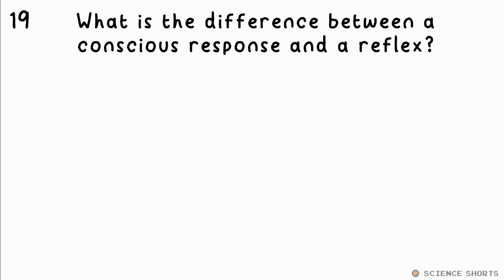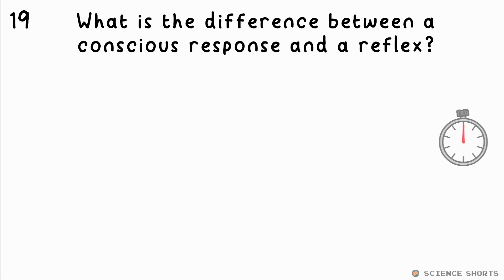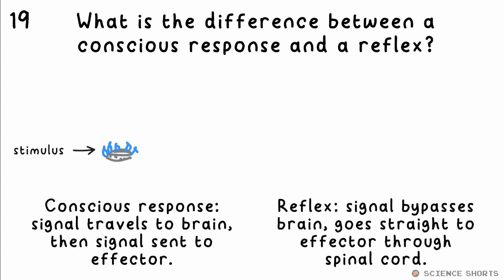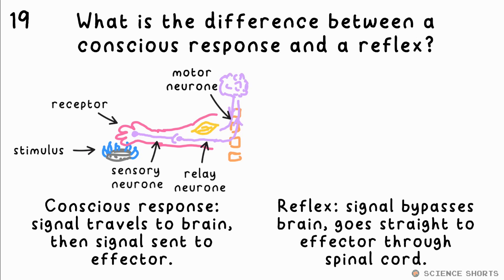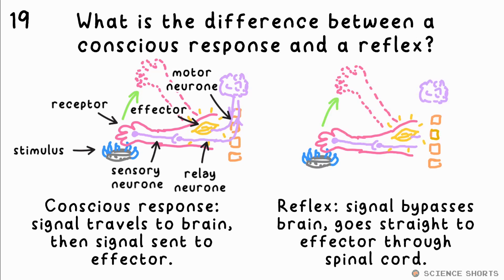What's the difference between a conscious response and a reflex? Use the names of the parts of the nervous system involved. A conscious response to a stimulus involves the signal going from the receptor — say skin, for example — through a sensory neuron to relay neurons, up the spinal cord to the brain. You make the decision to act and then a signal goes back via relay and motor neurons to an effector, say the muscles in your arm. A reflex arc is similar, but the signal goes straight through the spinal cord to the motor neurons and effector, bypassing the brain. You act before you even realise what's happened.